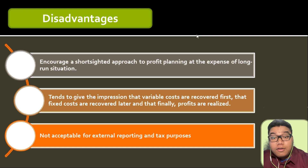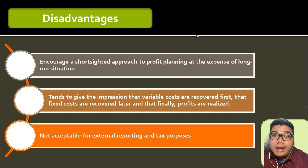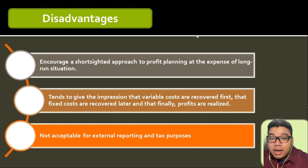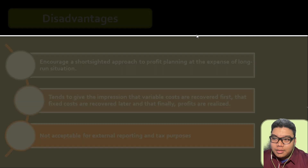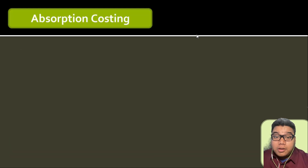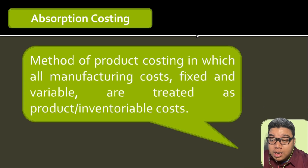Finally, variable costing statements are not acceptable for external reporting and tax purposes because accounting standards require the full cost approach, or absorption approach. This states that all production costs directly attributable to production should be included in the cost of inventories.